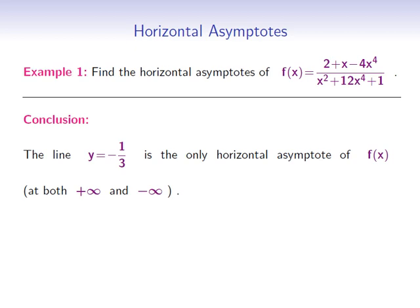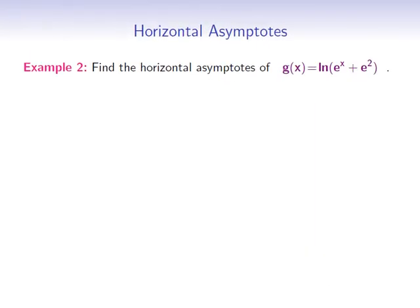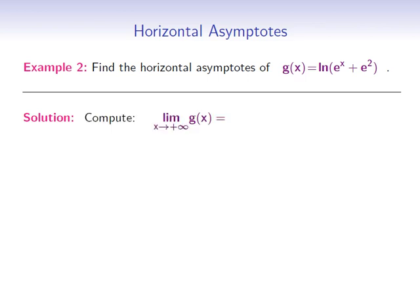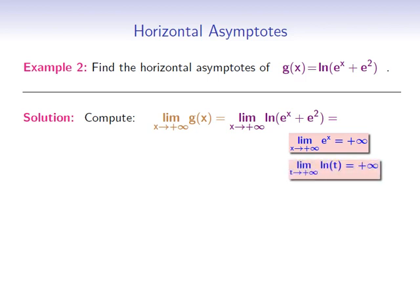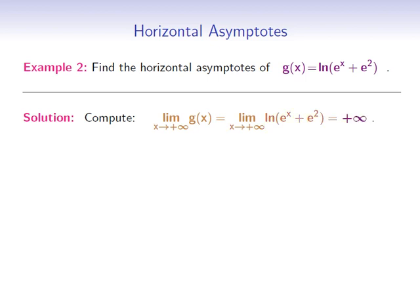Now let's move on to another example. Find the horizontal asymptotes of g of x equals the natural logarithm of e to the x plus e squared. We start by computing the limit of g of x as x goes to infinity. That's the limit as x goes to infinity of the natural logarithm of e to the x plus e squared. As x goes to infinity, e to the x will go to infinity as well, and the natural logarithmic function will also go to infinity. Therefore the whole limit is equal to positive infinity, and we conclude that g of x has no horizontal asymptote at positive infinity.